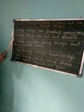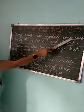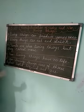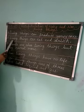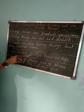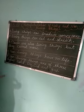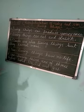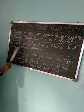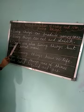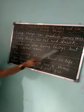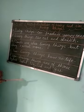Coming to the next point: living things can produce young ones. This means living things can produce babies — living things के babies हो सकते हैं. Next point: living things can eat and drink — वो खा भी सकते हैं और वो पानी या anything they can drink. Plants are also living things, but they cannot move. Plants non-living things नहीं होते हैं — plants are living things, but they cannot move.